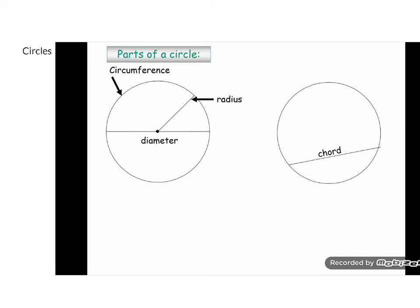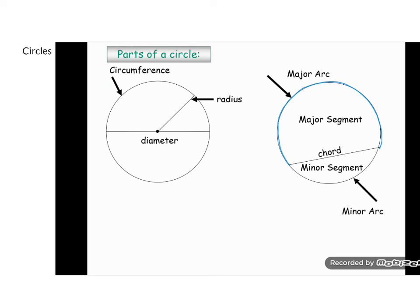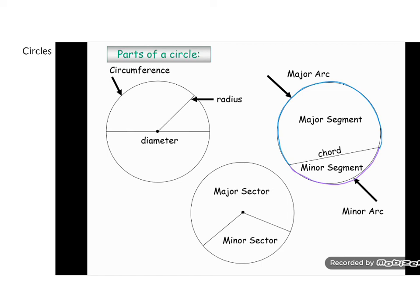The chord divides the circle into two parts: a major segment and a minor segment. When you move from the one side of the chord all around the circumference to the other side, you form a major and a minor arc. You can also divide a circle by drawing lines from the center of the circle, and then you form a minor and a major sector.